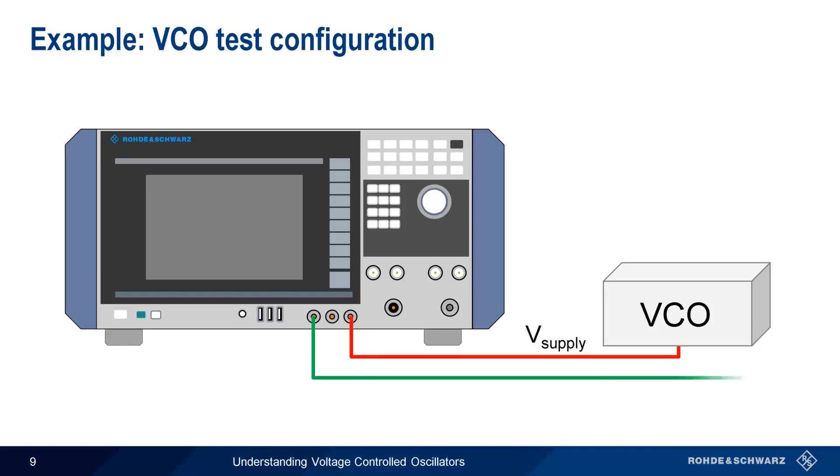Next, we connect the tuning or control voltage, V-tune. This is a variable voltage that controls the VCO output frequency. And finally, the VCO RF output is connected to the RF input of our instrument, which then measures and plots the output characteristics of our VCO as a function of the variable input voltage.